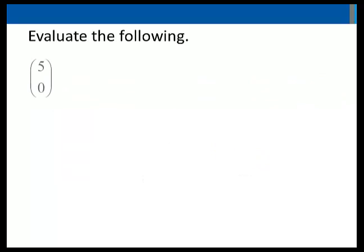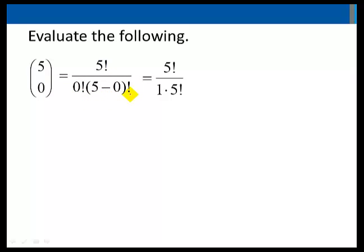5 choose 0 equals 5 factorial over 0 factorial times 5 minus 0 factorial. 0 factorial is 1, so again this simplifies to 1. So a number choose itself is 1, and a number choose 0 is 1.